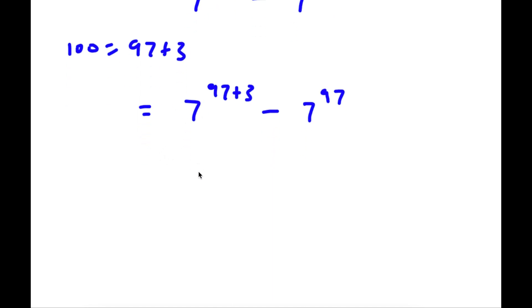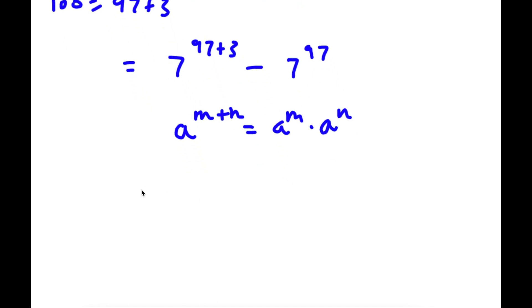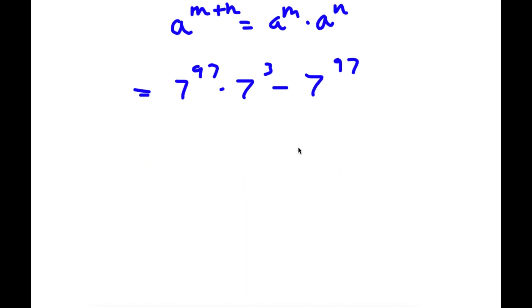Now if I have something in the form a to the power of m plus n, this is equal to a to the power of m times a to the power of n. So 7 to the power of 97 plus 3 equals 7 to the power of 97 times 7 to the power of 3, minus 7 to the power of 97. Now if I factor out 7 to the power of 97, I get 7 to the power of 97 times — 7 to the power of 97 times 7 to the power of 3 divided by 7 to the power of 97 is simply 7 to the power of 3, minus 7 to the power of 97 divided by 7 to the power of 97, which is 1.